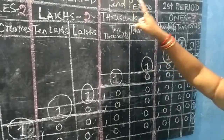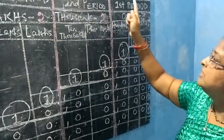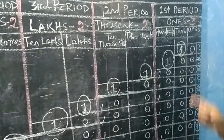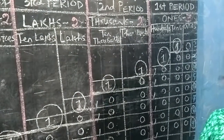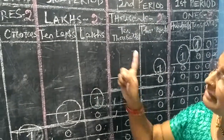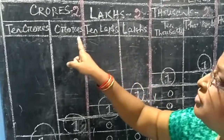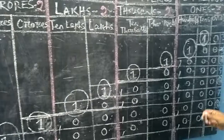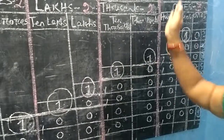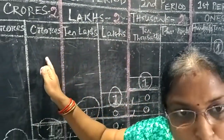Lastly, we discuss that in the Indian place value system there are 4 periods. First period: 1s, with 3 digit places. Second period: 1000s, with 2 digit places. Third period: lakh, also 2 digit places. Fourth period: crore, also 2 digit places. We separate 1s from 1000s — we put a comma — 1000s from lakh — we put a comma — and lakh from crore — we also put a comma.